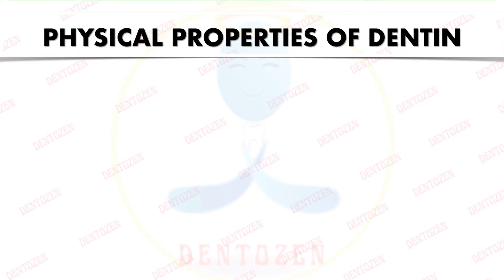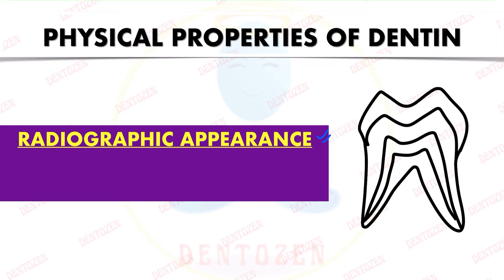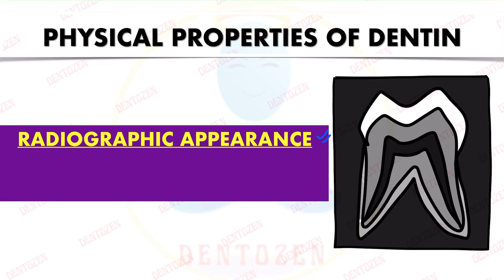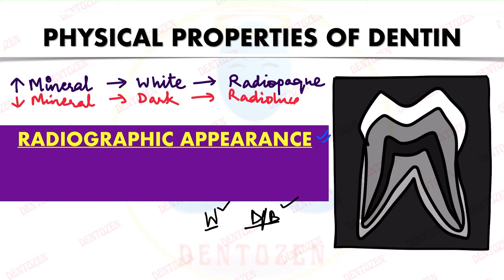Regarding radiographic appearance: on a radiograph, structures with more mineral content appear white and are called radiopaque, while structures with less or no mineral content appear dark or black and are called radiolucent. Enamel, being more mineralized, appears white; dentine, being less mineralized than enamel, appears darker than enamel.